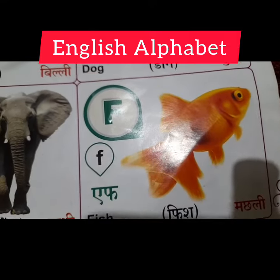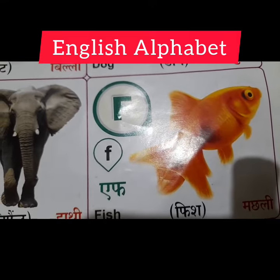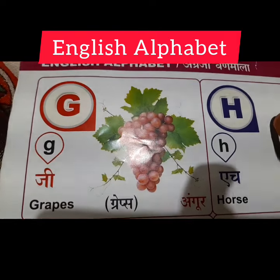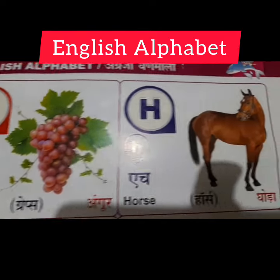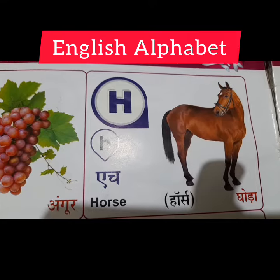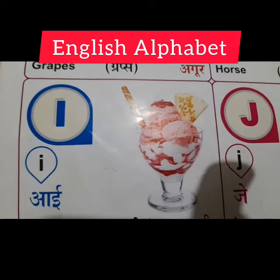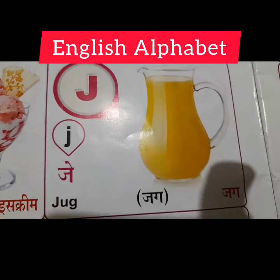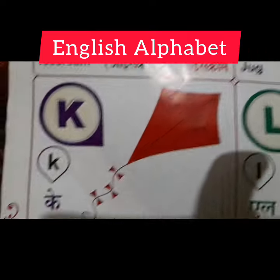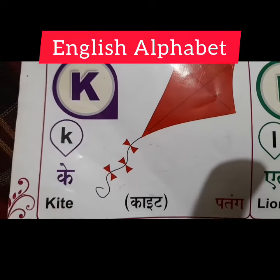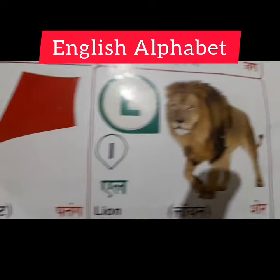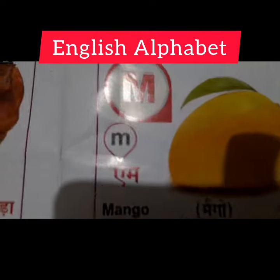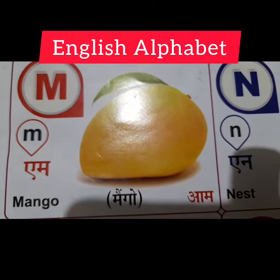F for Fish. G for Grapes. H for Horse. I for Ice Cream. J for Jug. K for Kite. L for Lion. M for Mango.